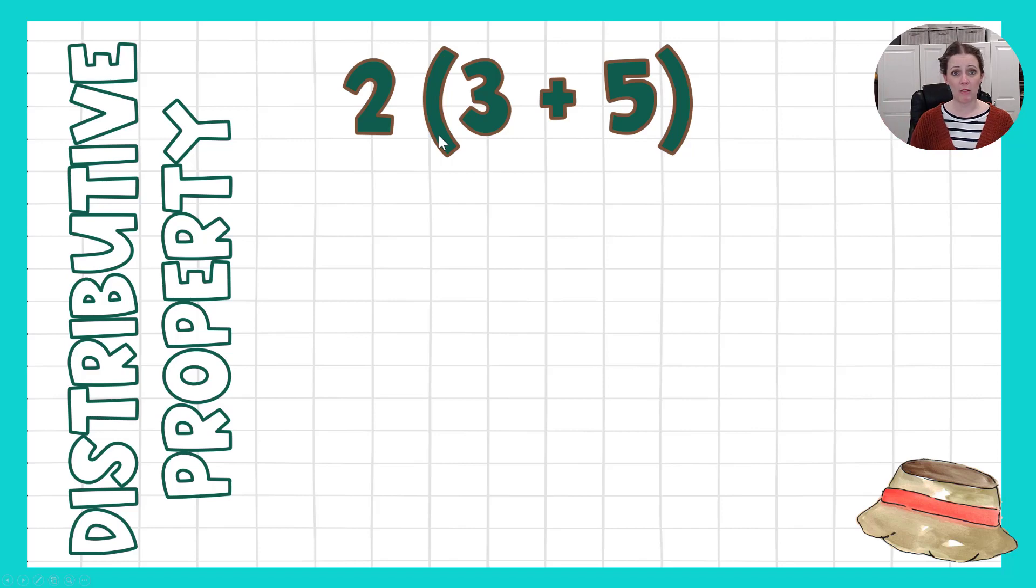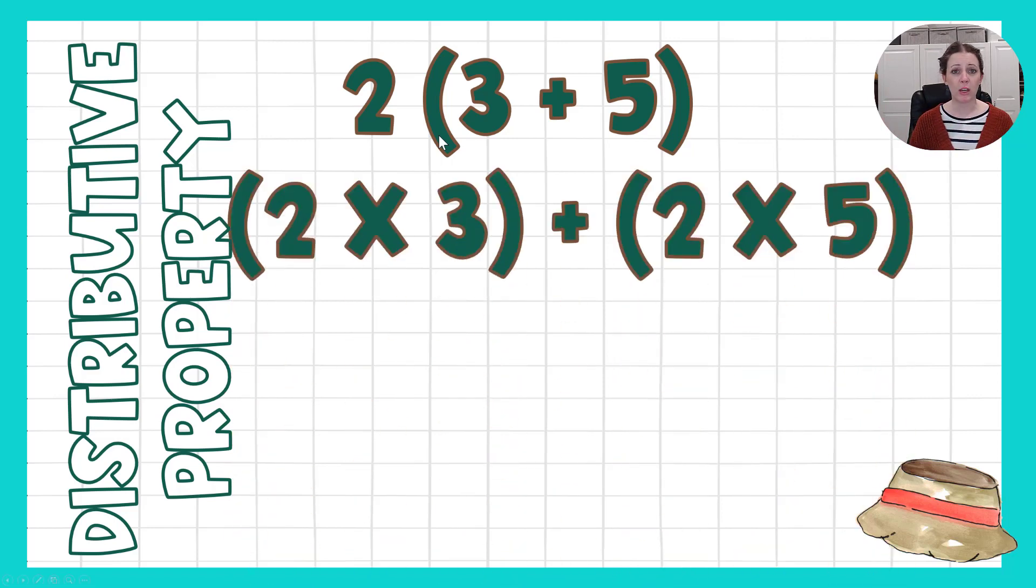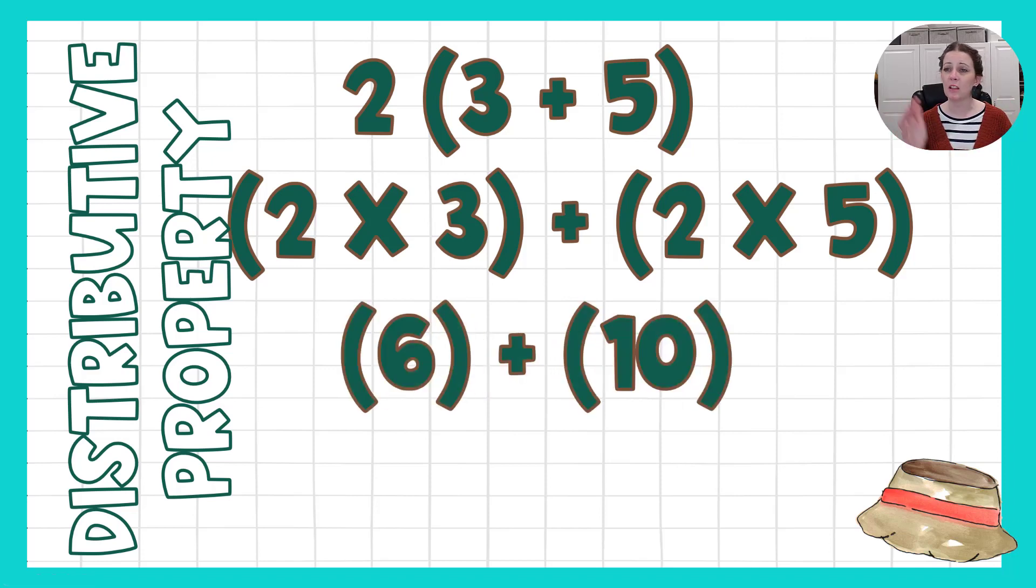So another way of writing this, using the distributive property, is to say, 2 times 3 plus, because I have a plus sign right here in the middle of my 3 plus 5, 2 times 5. So now if I work these parentheses, 2 times 3 is 6, and 2 times 5 is 10, 6 plus 10 is 16. That is another way of looking at this, and that is using the distributive property. This is the method and the strategy that I want you to practice today.